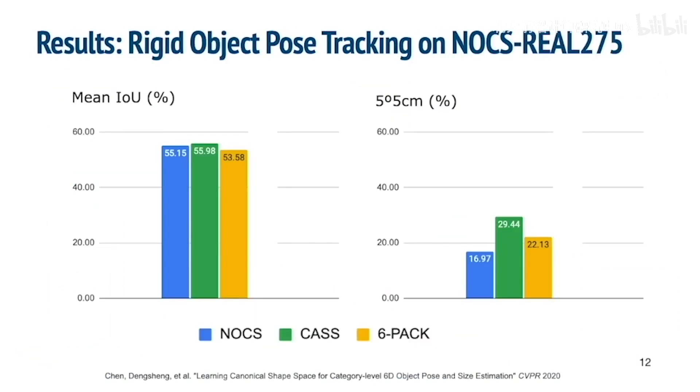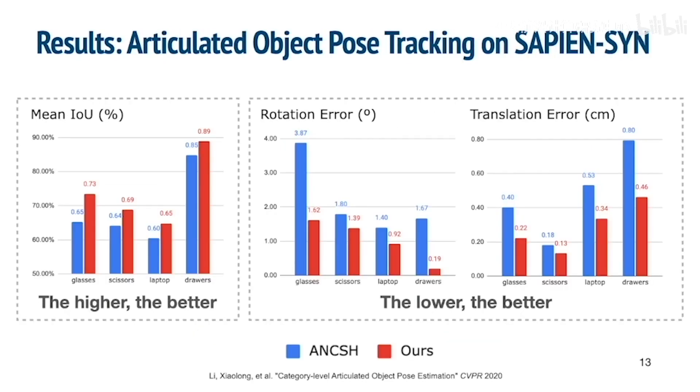Here we show quantitative results. On NOCS rigid object dataset, compared to single-frame state-of-the-art methods, NOCS, CASS, and tracking state-of-the-art method 6-pack, we have a higher mean IoU and a much higher 5-degree 5-centimeter percentage. On our synthetic Sapien articulated object dataset, we also beat the state-of-the-art method ANCSH on all categories and metrics.